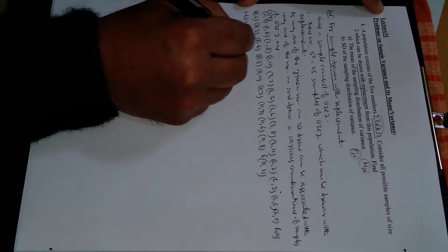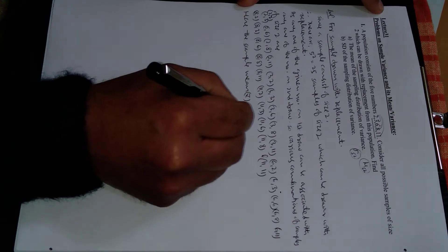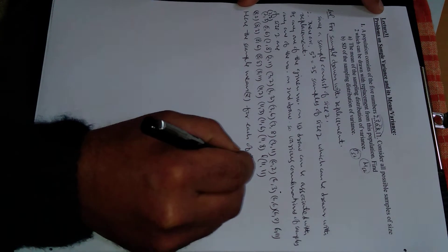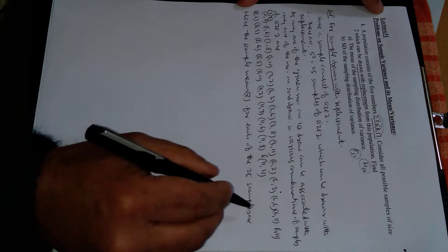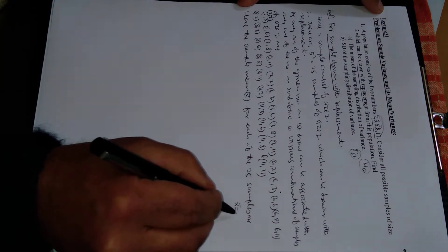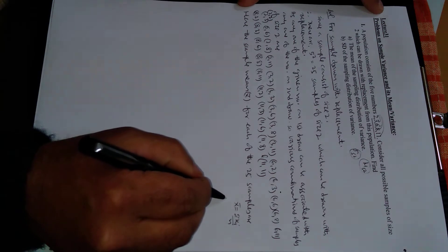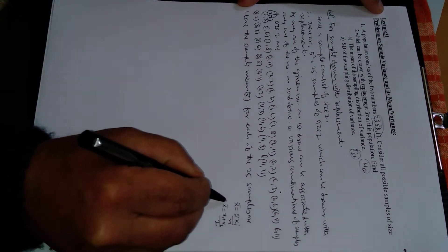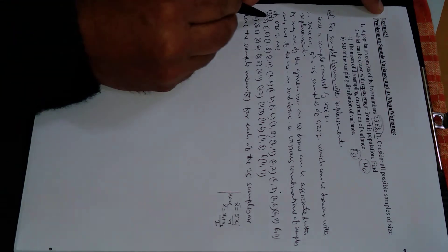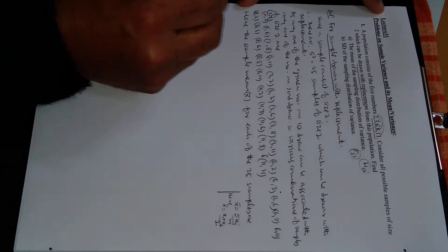The sample mean x̄ for each of the 25 samples: we want to find x̄ for each pair. The formula is x̄ = (x₁ + x₂)/2, since the sample consists of size 2. For (2,2): average is 2. For (2,3): average is 2.5. For (2,6): average is 4.